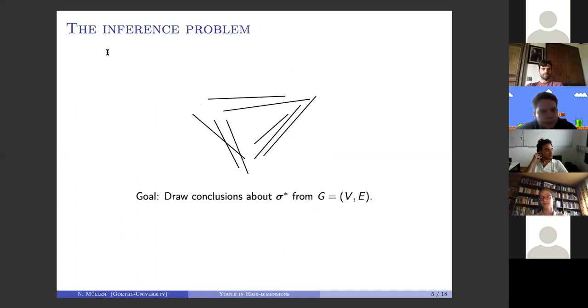In this way you generate a graph, and in the next step somebody takes away the colors and you're just given the graph. The problem is to draw conclusions about this planted coloring from the first step just by looking at this graph. In this inference problem, there can be various particular questions.